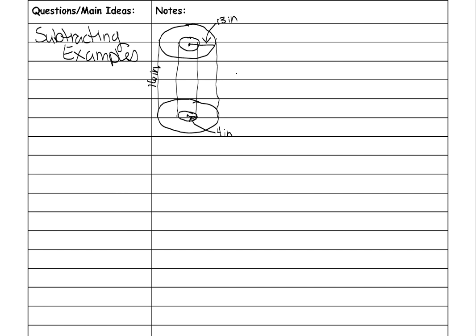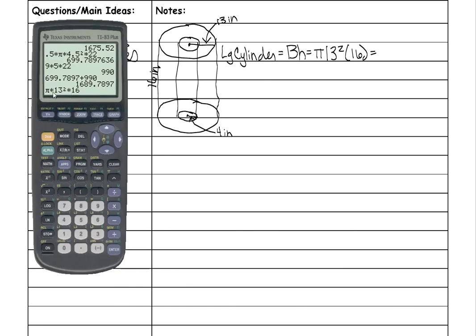Let's find the volume of the large cylinder first: area of the base times the height. The base is a circle, so pi r squared. The radius of the big cylinder is 13 inches, so pi times 13 squared times the height of 16. Put that in your calculator — pi times 13 squared times 16 — and you get 8,494.87 cubic inches.